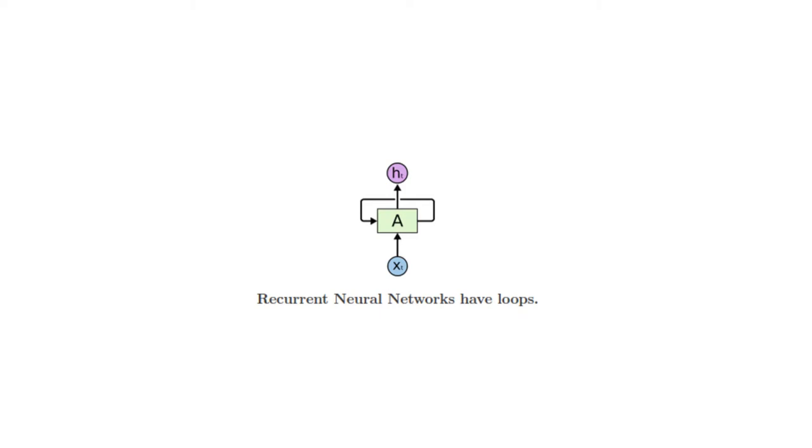Recurrent neural networks address this issue. They are networks with loops in them, allowing information to persist. In the given diagram, a chunk of neural network A looks at some input XT and outputs a value HT. A loop allows information to be passed from one step of the network to the next.